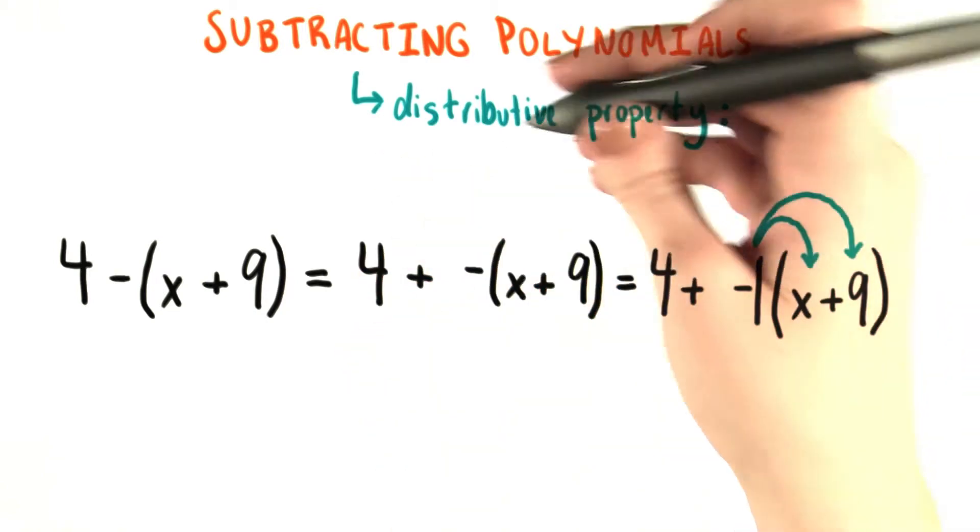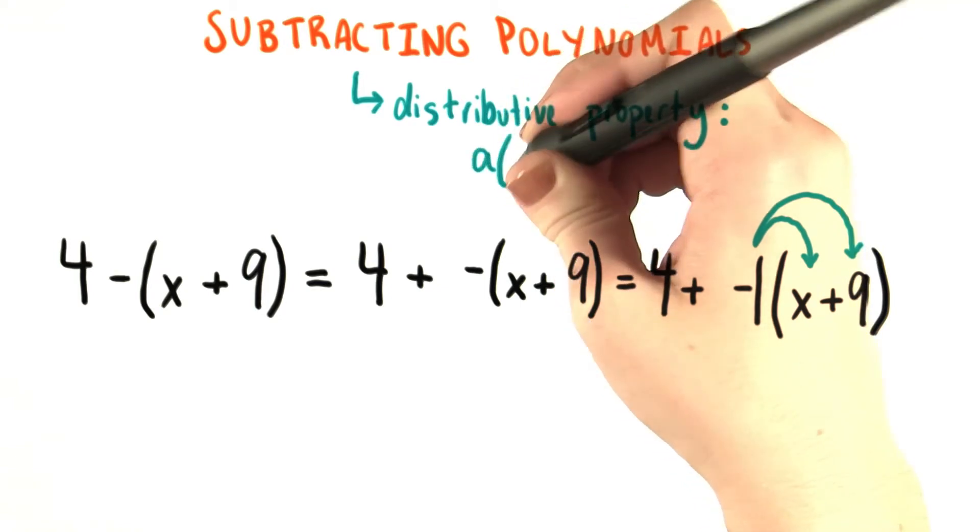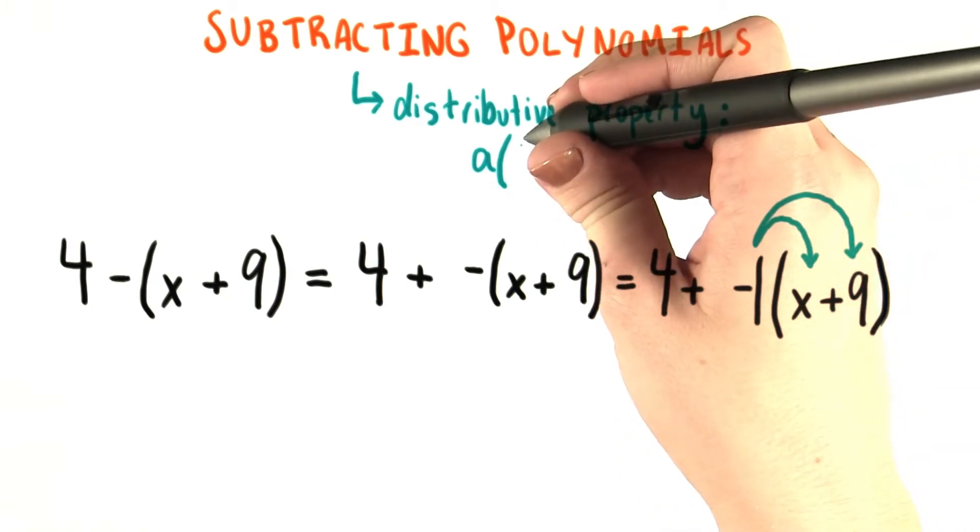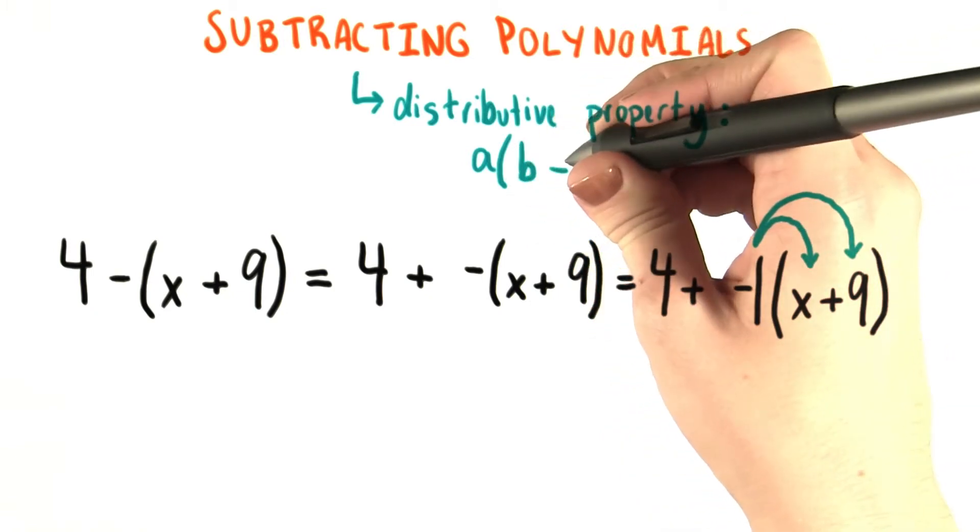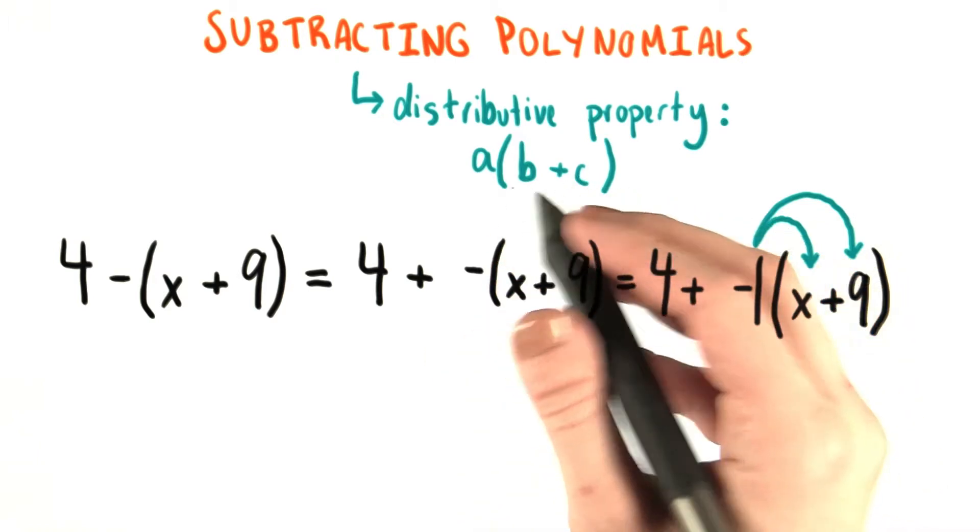The distributive property basically says that if you have some number or variable, let's call it a, and you want to multiply that by some number of terms that are inside parentheses, let's just pick 2 to be simple and call them b and c. And we'll just add them, although of course c could be negative and you could be subtracting, or b could be negative.